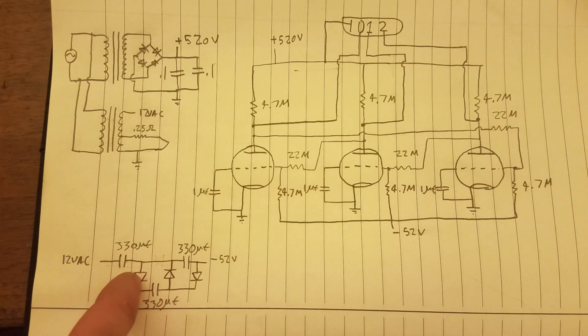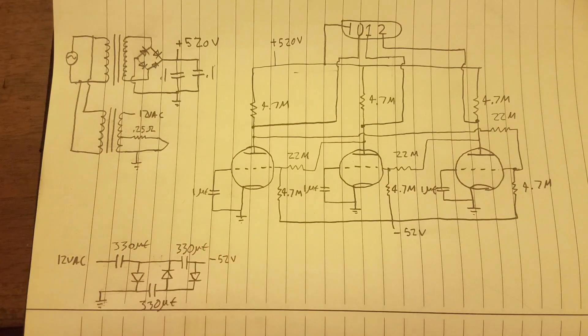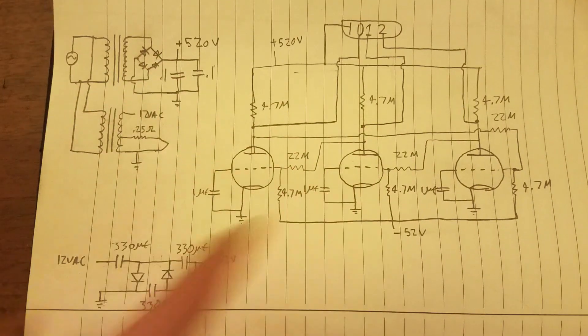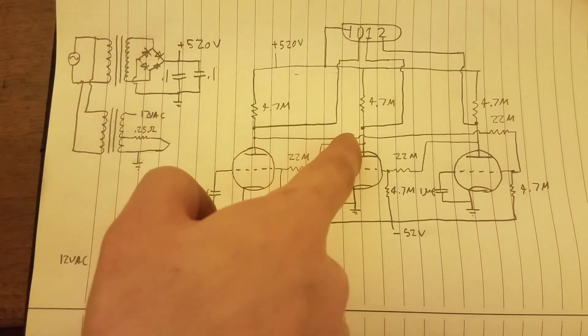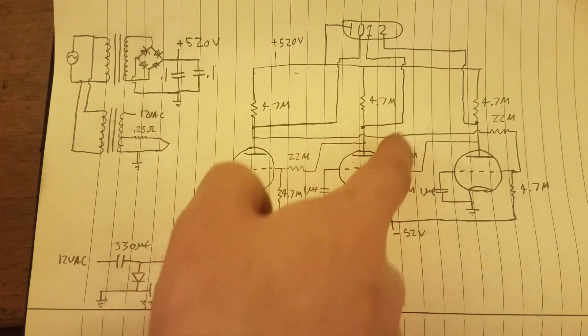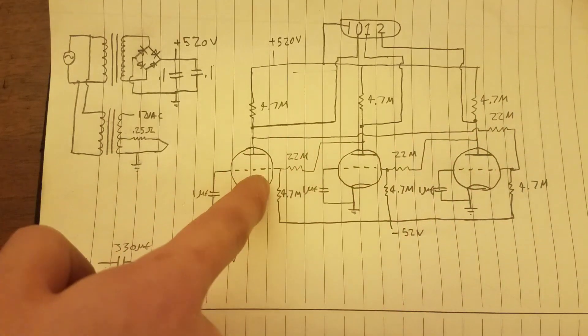Right here is the voltage multiplier. That gives us our negative 52 volts to bias the tubes. And here's the ring oscillator. A grid of one tube is just connected to the plate of another. And the grid of that tube is connected to the plate of another. And then goes back into a circle to form a ring.